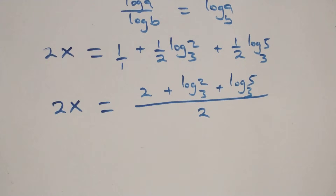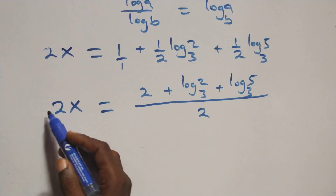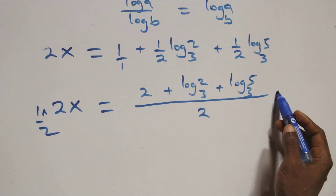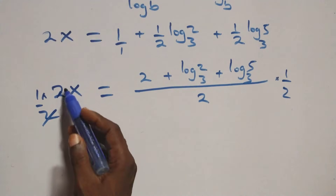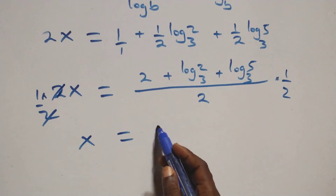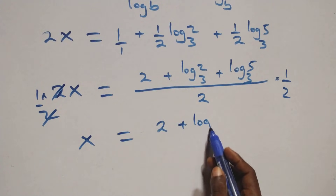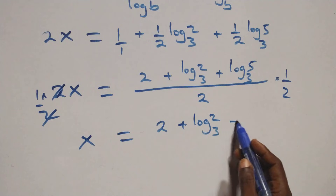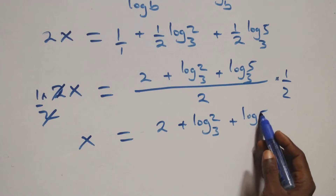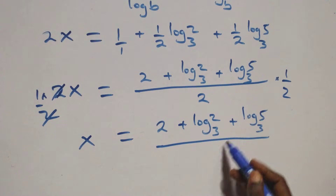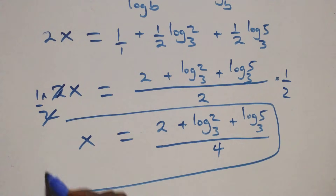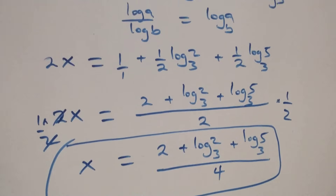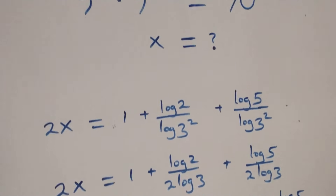We multiply through by one-half on both sides. That gives us a denominator of 2 times 2, which is 4. So the value of x is: x equals to 2 plus log base 3 of 2 plus log base 3 of 5, all over 4.